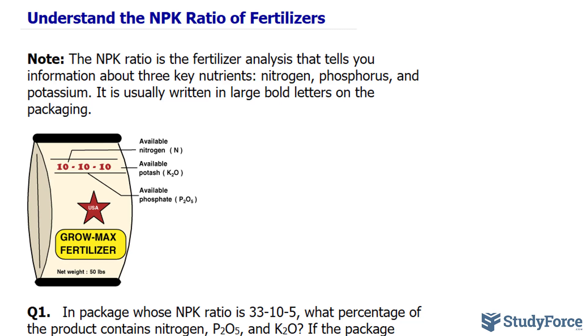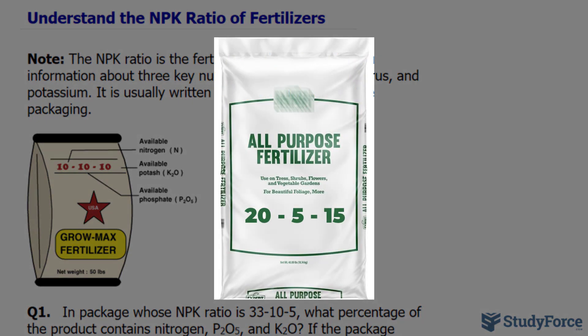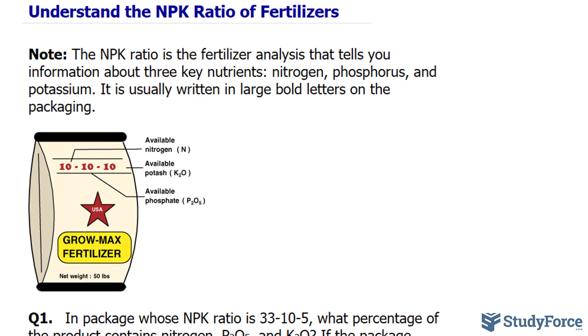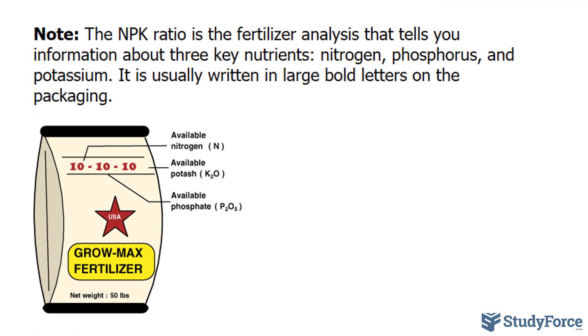One of the most important things that you'll need to know before performing any fertilizer calculations is to understand the numbers presented in the NPK ratio of the fertilizer. The NPK ratio is the fertilizer analysis that tells you information about three key nutrients: nitrogen, phosphorus, and potassium, and is usually written in large bold letters on the packaging, as shown in this illustration.